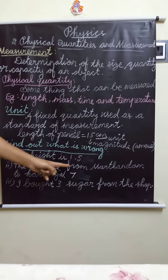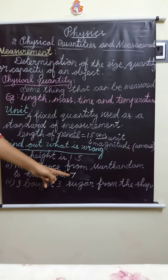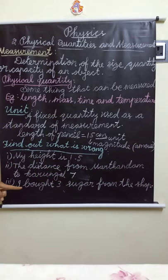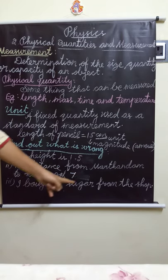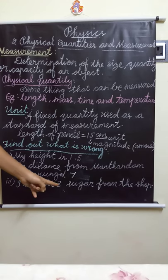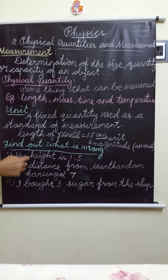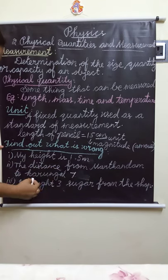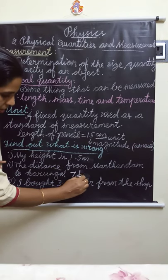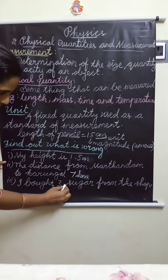Next: 'The distance from Marthandum to Karangal is 7.' What is the mistake? The unit is missing. It should be 7 kilometres. Next: 'I bought 3 sugar from the shop.' What is the unit? 3 kg. So the correct sentences are: My height is 1.5 metres. The distance from Marthandum to Karangal is 7 kilometres. I bought 3 kg sugar from the shop.